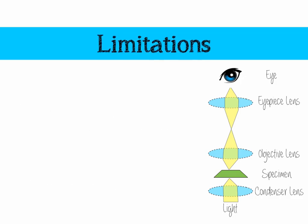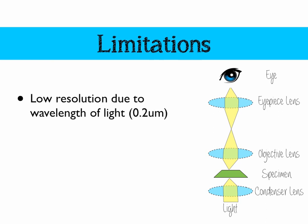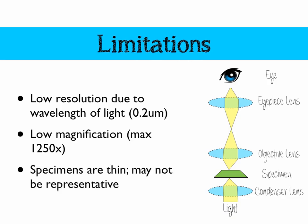However, the light microscope comes with a few limitations. They have really low resolution — because of the long, lazy wavelength of light, we can only resolve apart objects that are 2 micrometres apart. They have low magnification, a maximum of 1,250 times, and most school or college microscopes will only be about 400 times max magnification. Also, specimens must be really thin on slides, so they may not be representative of what the actual cell looks like in its entirety.